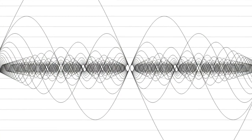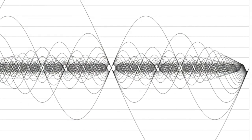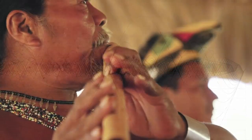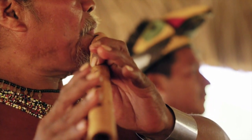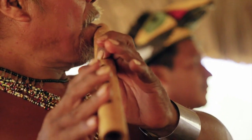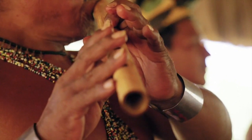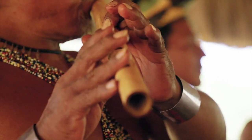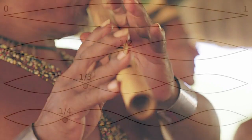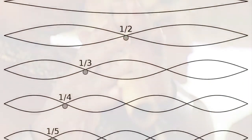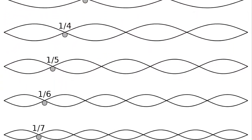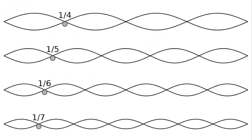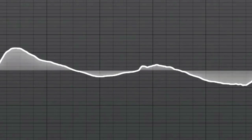Harmonics, also referred to as overtones or partials, are resonant frequencies which are organized in a universal mathematical relationship called the harmonic series. This relationship is the same whether the sound comes from a bass, a flute, or from the human voice itself.